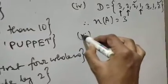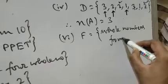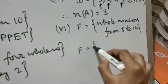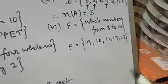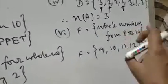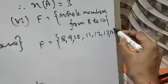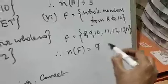Question number 6: given F = whole numbers from 8 to 14. Write the elements first. Whole numbers from 8 to 14 means we include 8 and 14 as well: 8, 9, 10, 11, 12, 13, 14. Now count the number of elements: 1, 2, 3, 4, 5, 6, 7. So the cardinal number will be 7.